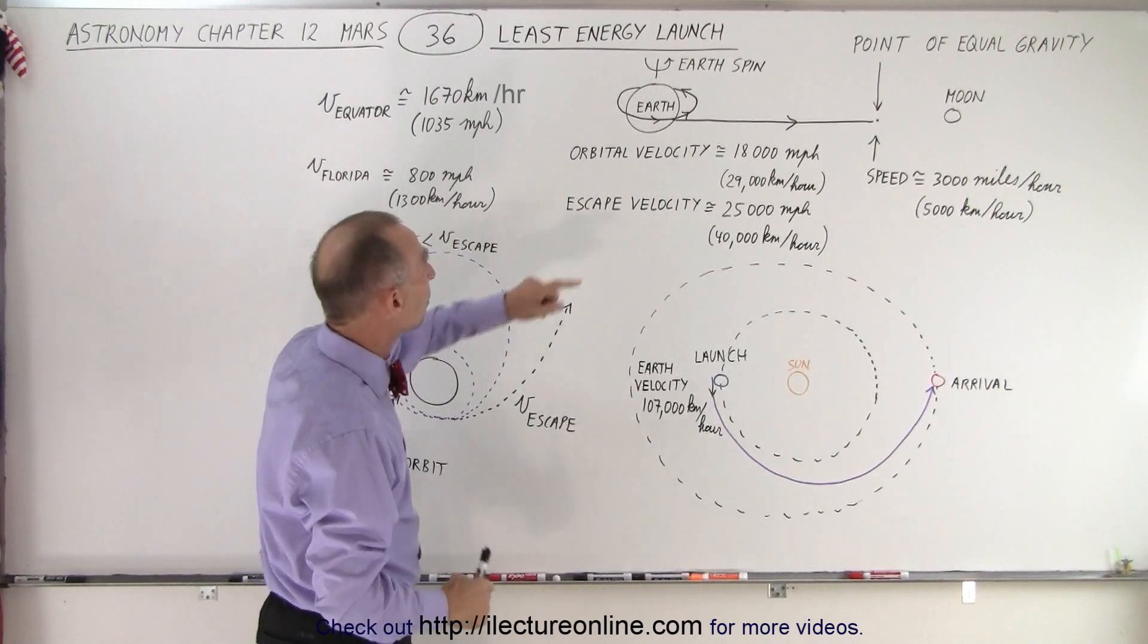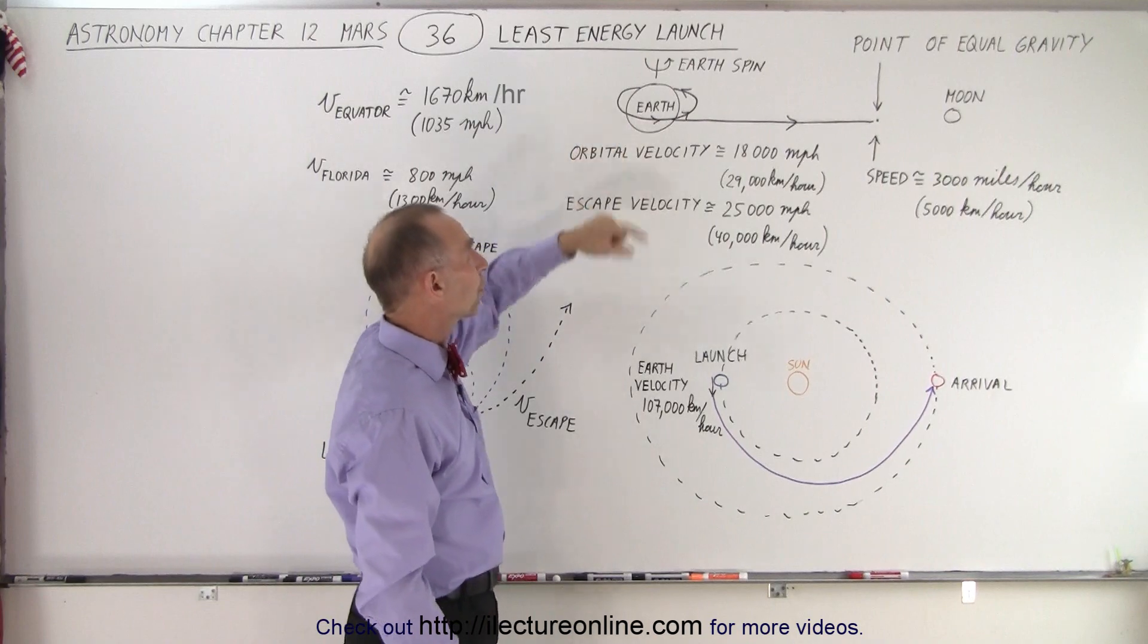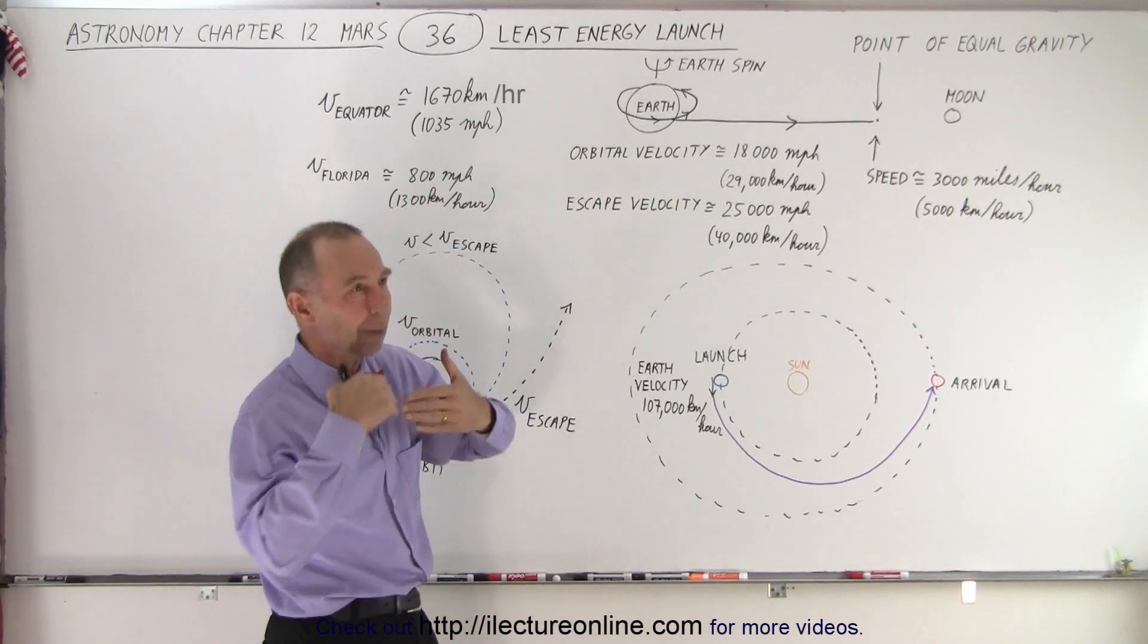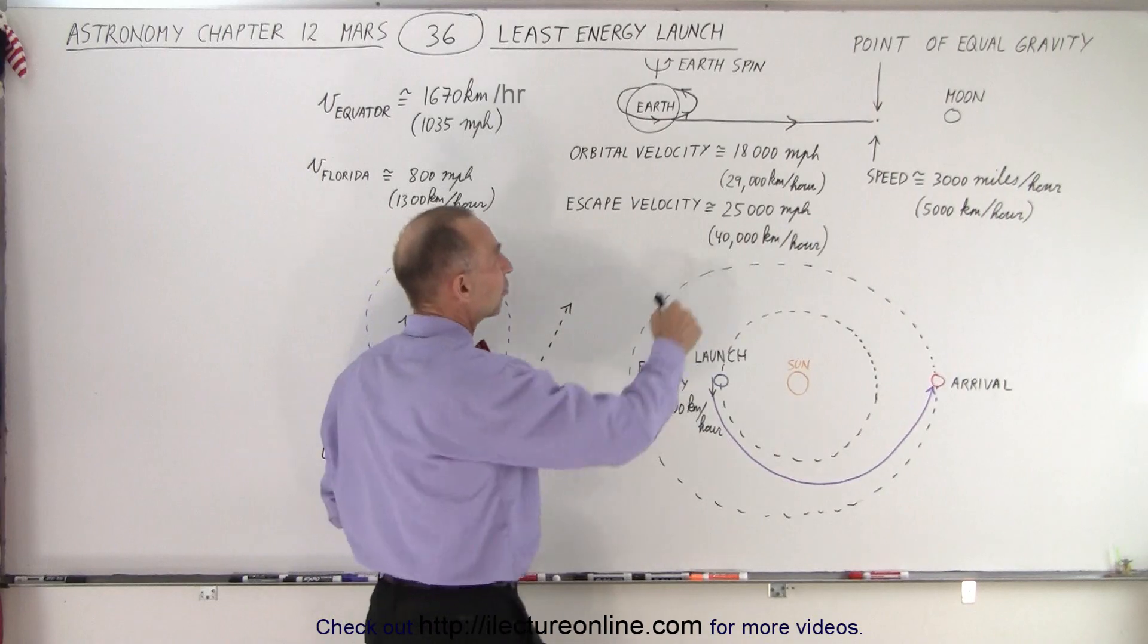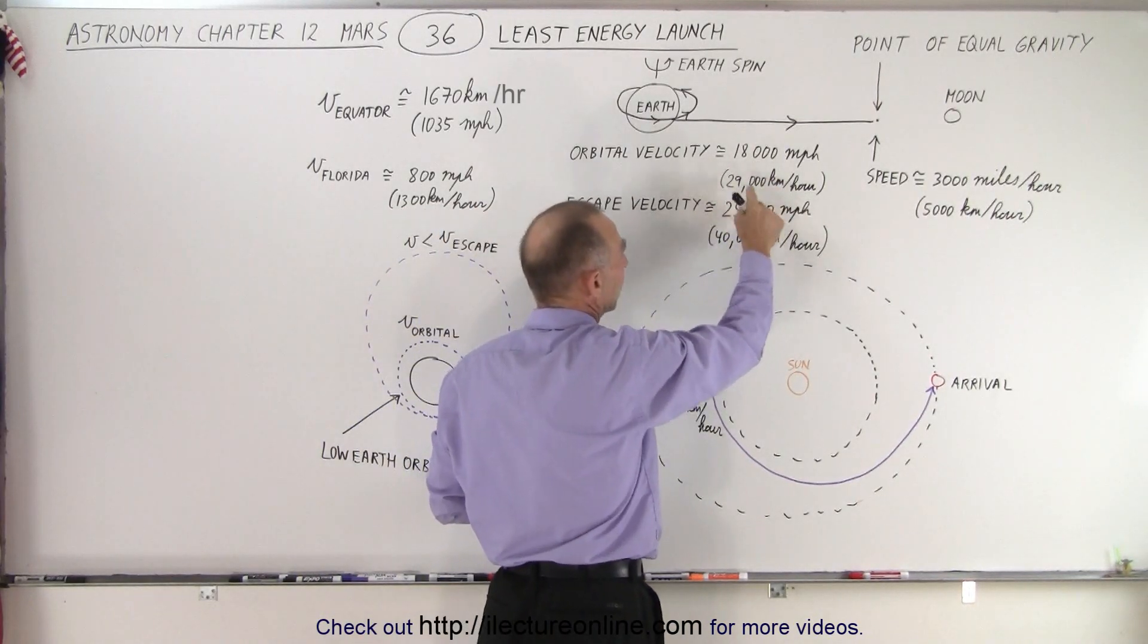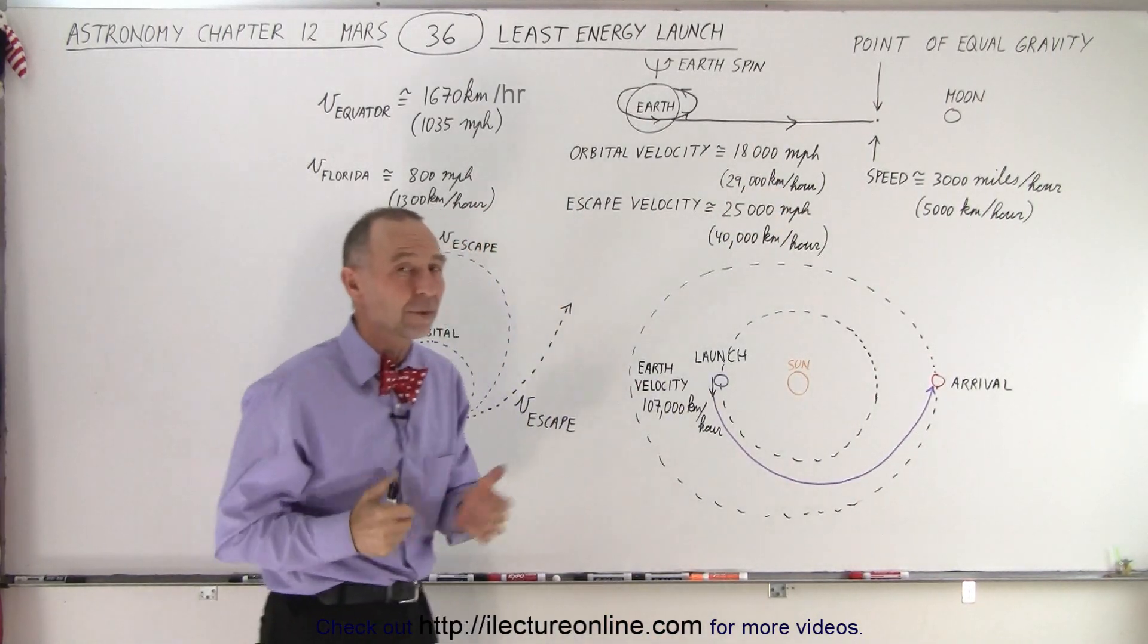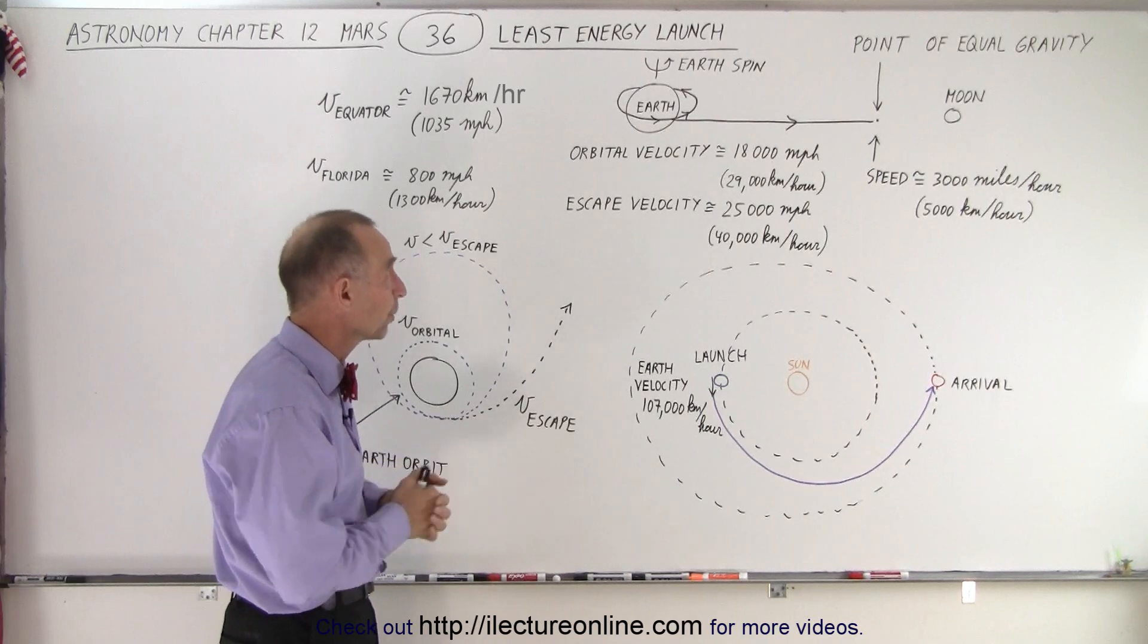First of all, you need to get up into the earth's orbital velocity. You have to get up in space and orbit the earth, which requires a speed of 18,000 miles per hour, which is about 29,000 kilometers per hour, to get into low earth orbit.